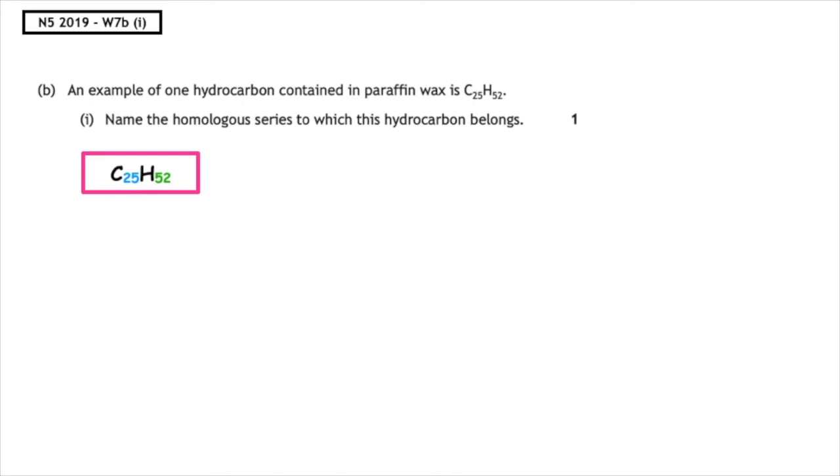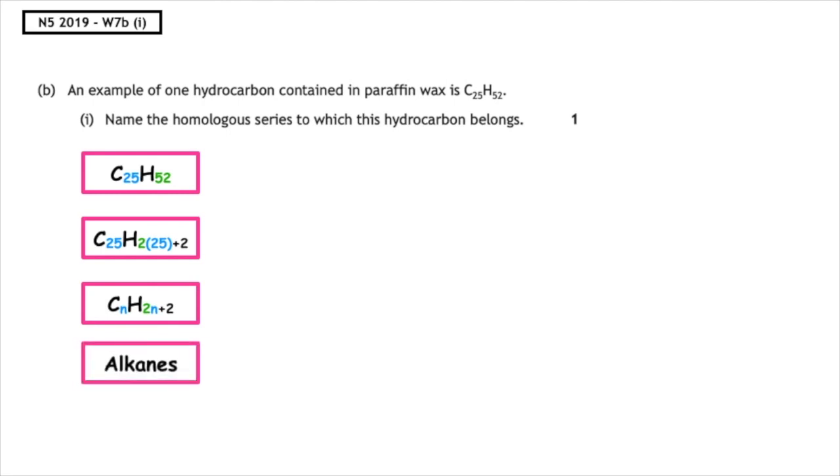So we're going to write down the molecular formula given as C25H52. Now remember, we always start off with CnH2n. So if I was to pop that into that format, I would have C25H times 2 times 25 and 2 times 25 is 50. So I would have to add 2, which means the general formula is CnH2n plus 2, which is the general formula associated with the alkanes.